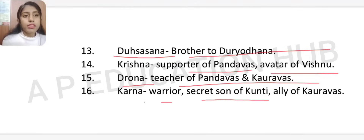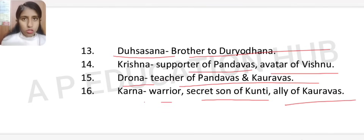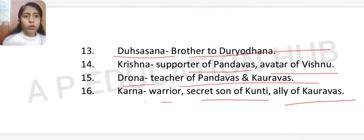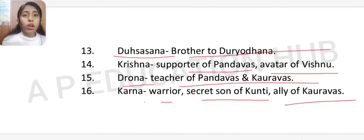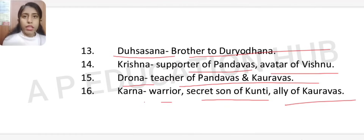Karna is a great warrior and the secret son of Kunti, born before her marriage from Suryadeva. He is an ally of the Kauravas. These are the main characters; there are also many minor characters who will appear in the videos on Temptation and Dicing.